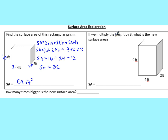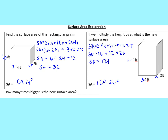In the second part, it asks us to multiply the height by 3 — what's the new surface area? All the dimensions are the same except for the height, which changes. Once you find the surface area for this second shape, we get 124 feet squared. It asks how many times bigger is the new surface area. We take 124 divided by 52, and that gets us approximately 2.384... — a decimal that keeps going.